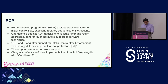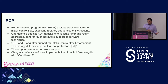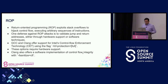One of the problems we're trying to solve from the compiler and hardware perspective is return-oriented programming, which exploits stack overflows to hijack control execution via arbitrary sequences of instructions. A defense against ROP attacks is to validate jumps and return addresses through hardware support or software techniques. One hardware support we have is control flow enforcement technology on x86 platforms. These options require hardware support. Clang — and this is something to highlight — also offers a software implementation for control flow integrity with a specific flag, which sounds amazing.